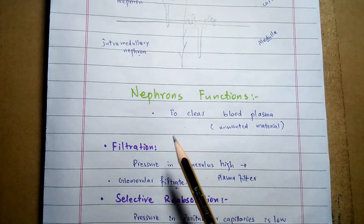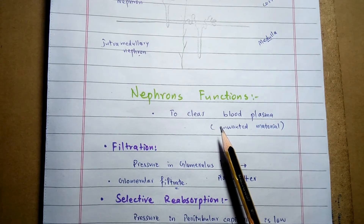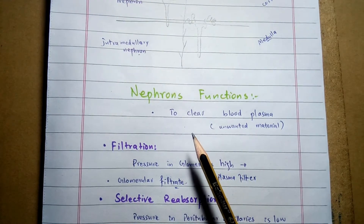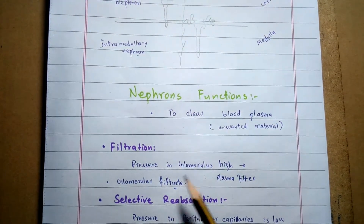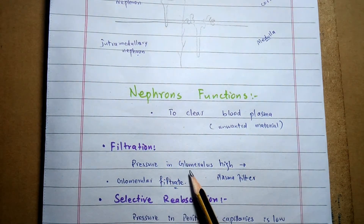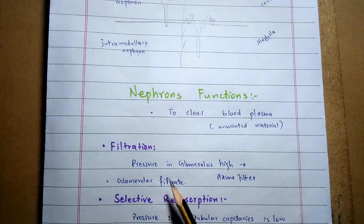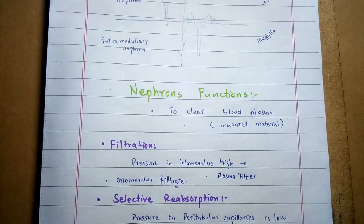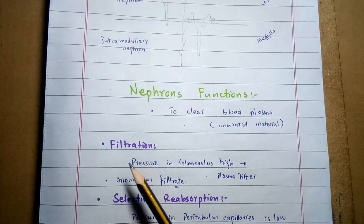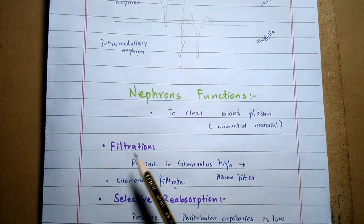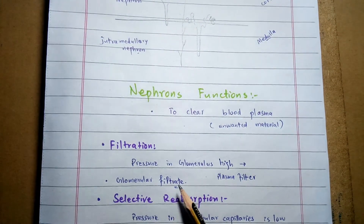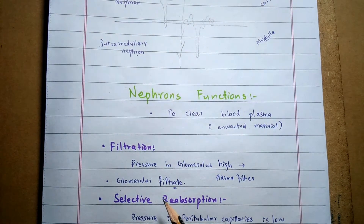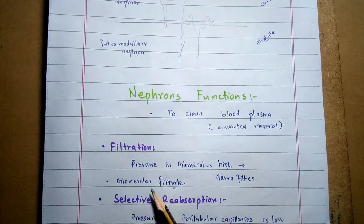The basic function of the nephron is to clear or clean the blood plasma of unwanted substances. It occurs in three steps. Number one is filtration — because of the high pressure in the glomerulus, it acts like the arterial end of the capillary, causing a large portion of the blood plasma to filter into the Bowman capsule, forming the glomerular filtrate.